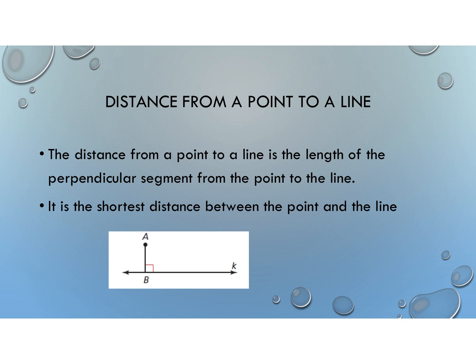It is going to be the shortest distance from the point to the line. In this particular picture, they're showing us the perpendicular segment going from point A to line K. Notice it's indicated with the little right angle. So this is our perpendicular segment, which is our distance.